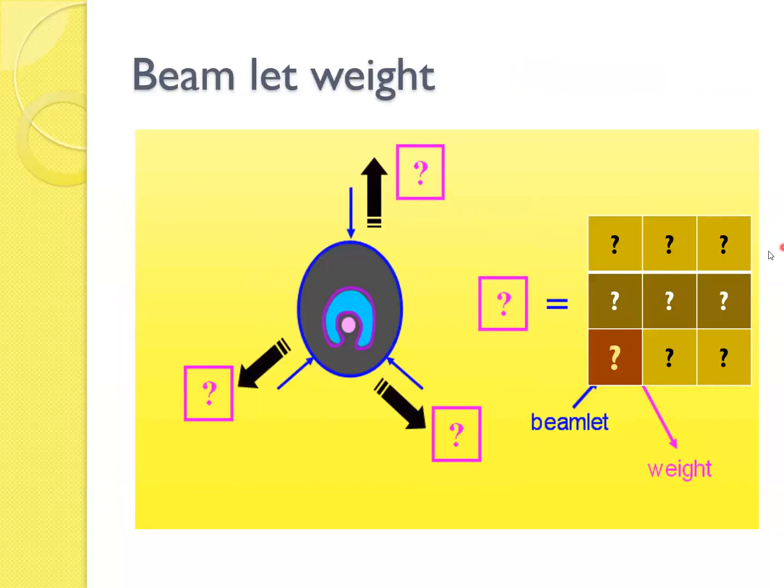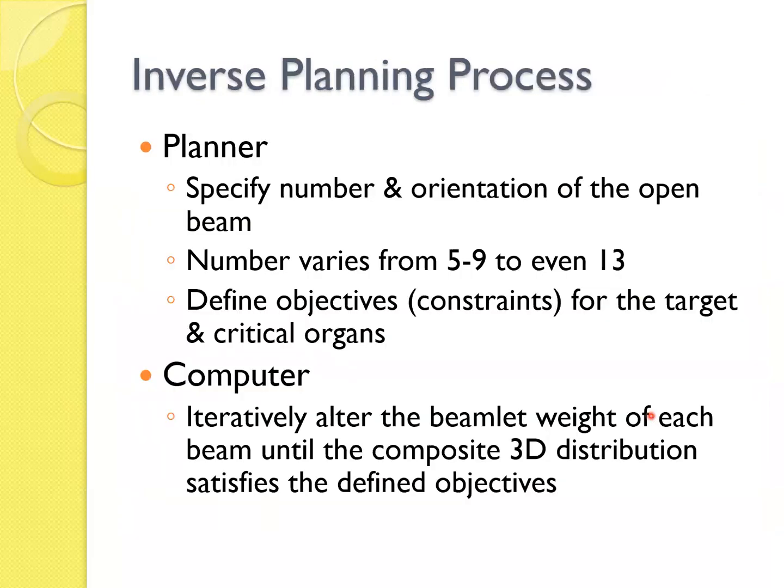So you ask what number will appear in that beamlet. So a planner has to specify the number orientation of the open field. Number varies from five to nine to even 13, to find objectives for the target, and the computer will work for you.